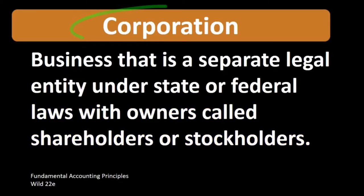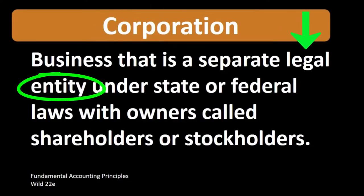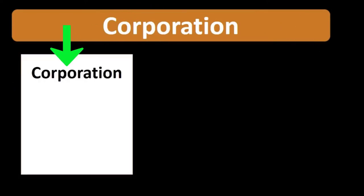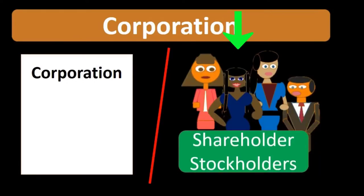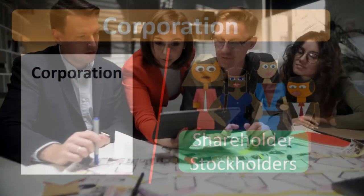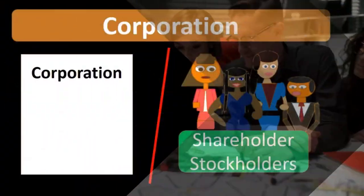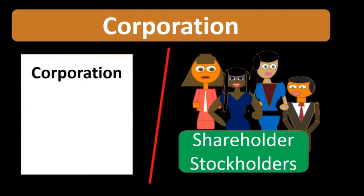When we think about corporations, we're thinking about a legal entity that is going to be separate from the owners. For example, you can think of the corporation basically as just a piece of paper — it is legally separate from the owners. This was a huge invention, a great invention.